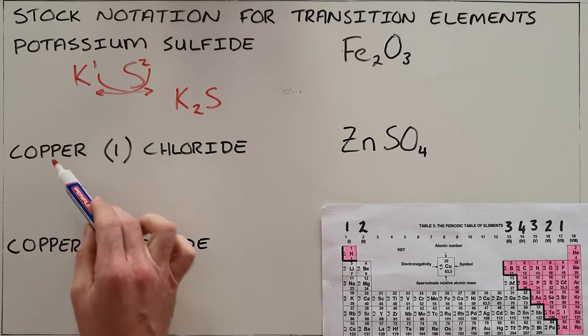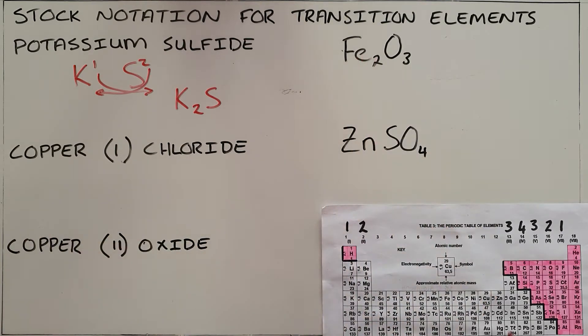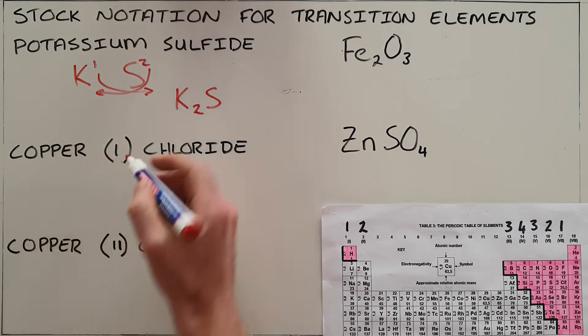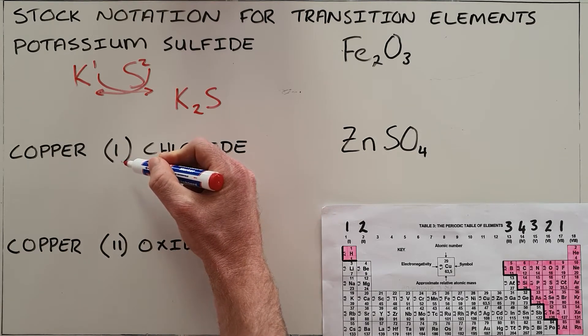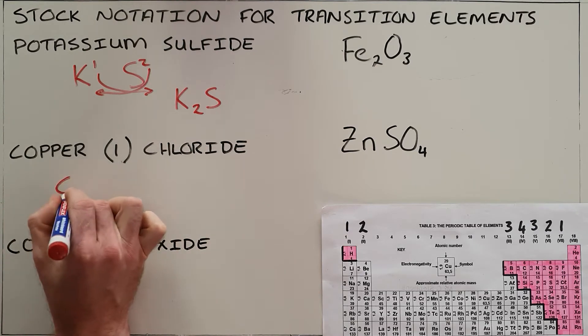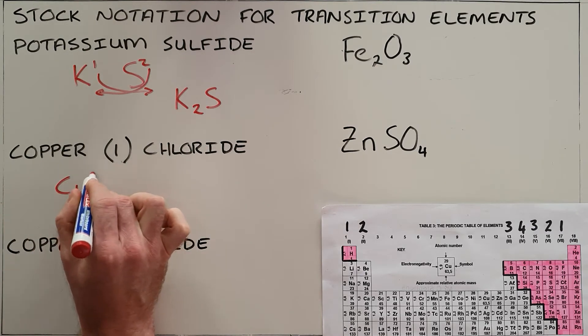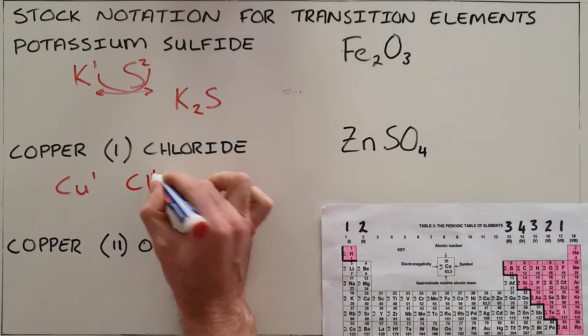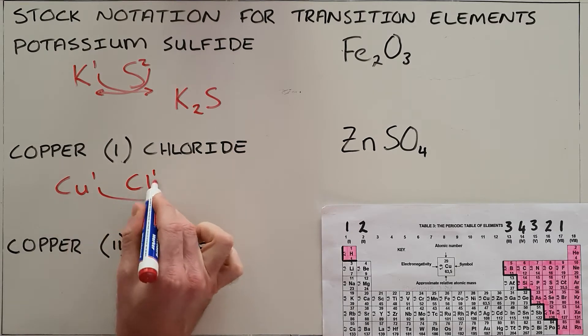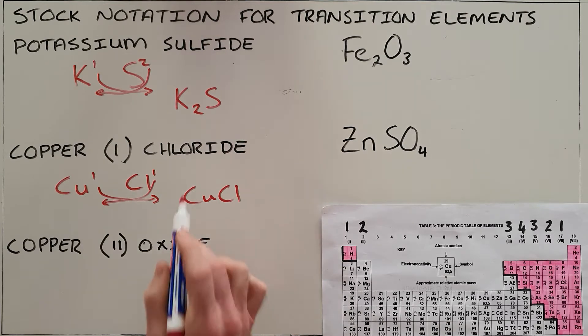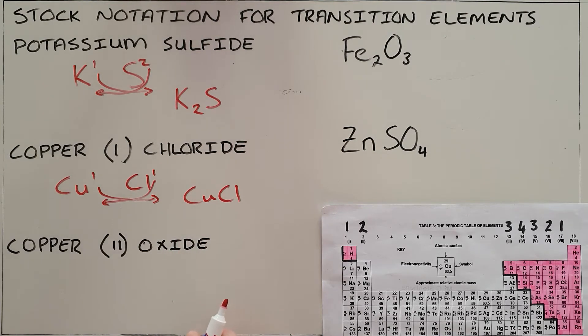For compounds like copper, iron and zinc, everything found in this transition block has what's called a variable valency. The valency will be given in brackets in Roman numerals in what we call stock notation. So in this example, copper(I) chloride, we are telling you that copper has a valency of 1. Chlorine from the periodic table has a valency of 1. They swap valencies which makes the formula CuCl for copper(I) chloride.